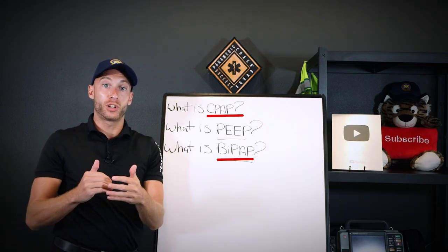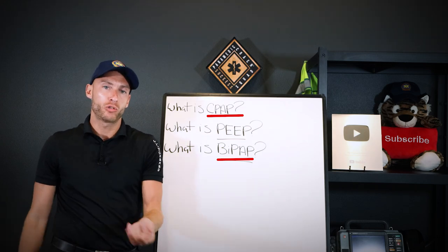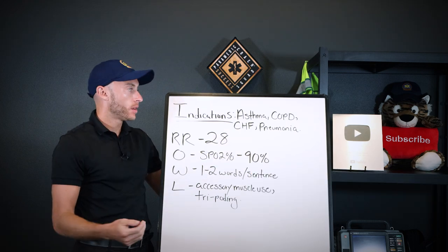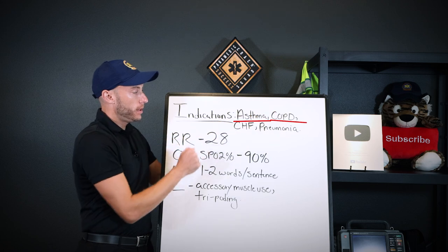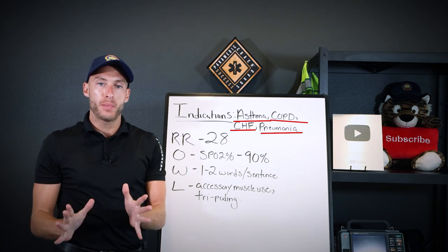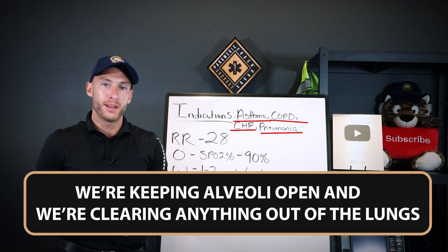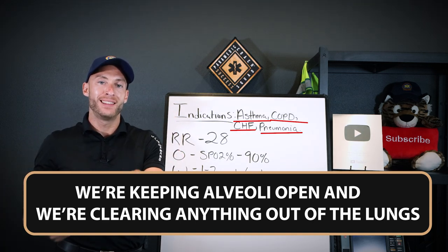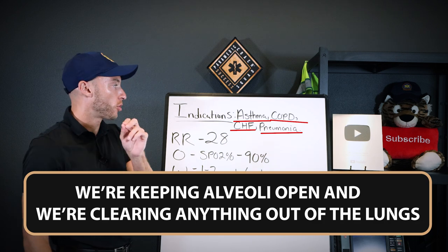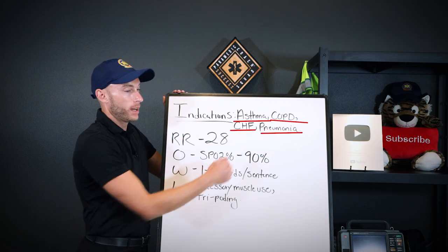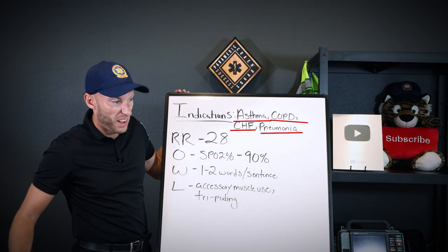Let's go over situations where we'll actually use CPAP in the ambulance — indications and contraindications. There are four main indications: asthma, COPD, CHF, and pneumonia. Remember, the big thing with CPAP is we're keeping the alveoli open and clearing anything out of the lungs that doesn't belong. CHF — fluid, blood — get it out. Pneumonia — fluid, infection, pus in the lungs — get it out. Keep the alveoli open.